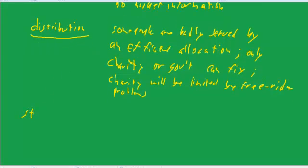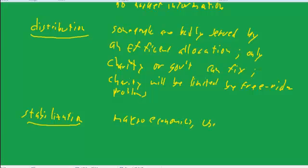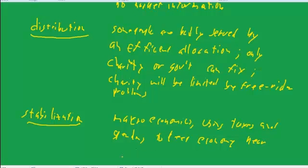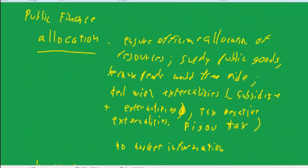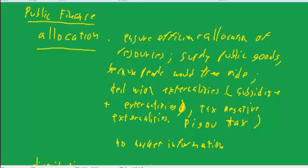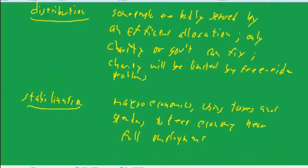The third function is stabilization, which goes back to macroeconomics — using taxes and spending to keep the economy near full employment. So when we talk about public finance, the broad functions of government are the allocation function, the distribution function, and the stabilization function.